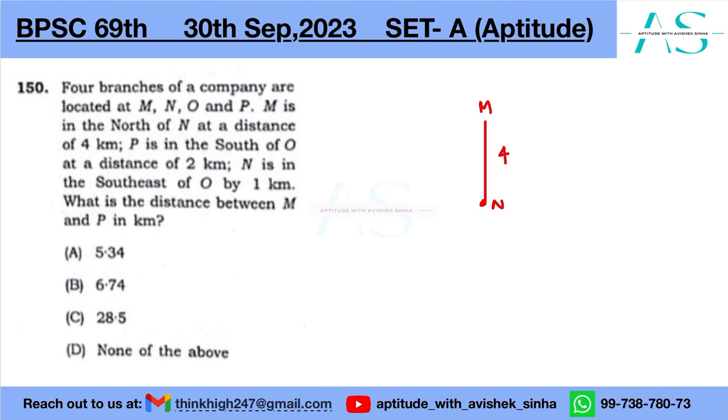Now, P is in the south of O at a distance of two. So P and O are new elements. Here there is nothing already given, so I have to move forward.